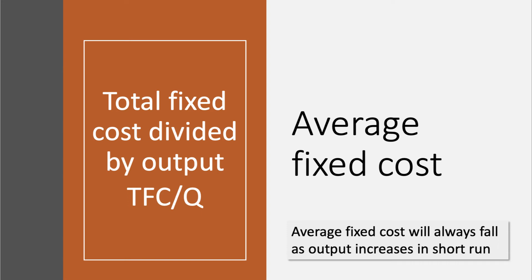Average Fixed Cost is Total Fixed Costs divided by Output — TFC divided by Q. Because Total Fixed Costs don't change with Output in the short term, the Average Fixed Cost will always fall as Output increases in the short run.